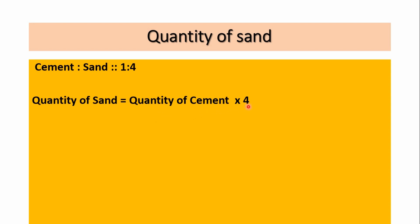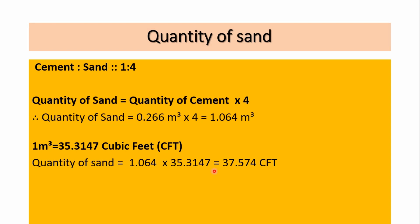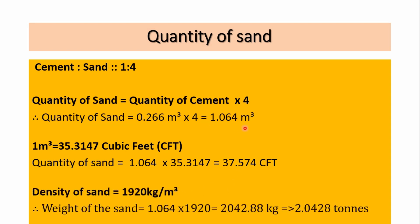Now let's see the quantity of sand. To calculate the quantity of sand, we multiply the quantity of cement by 4 because cement and sand are in a ratio of 1:4. Therefore, quantity of sand equals 0.266 meter cube multiplied by 4, which gives 1.064 meter cube. Since 1 meter cube equals 35.3147 cubic feet, multiplying gives 37.574 cubic feet. For the weight, multiplying 1.064 by the density of sand (1920 kg/m³) gives 2042.88 kg, or 2.0428 tons.